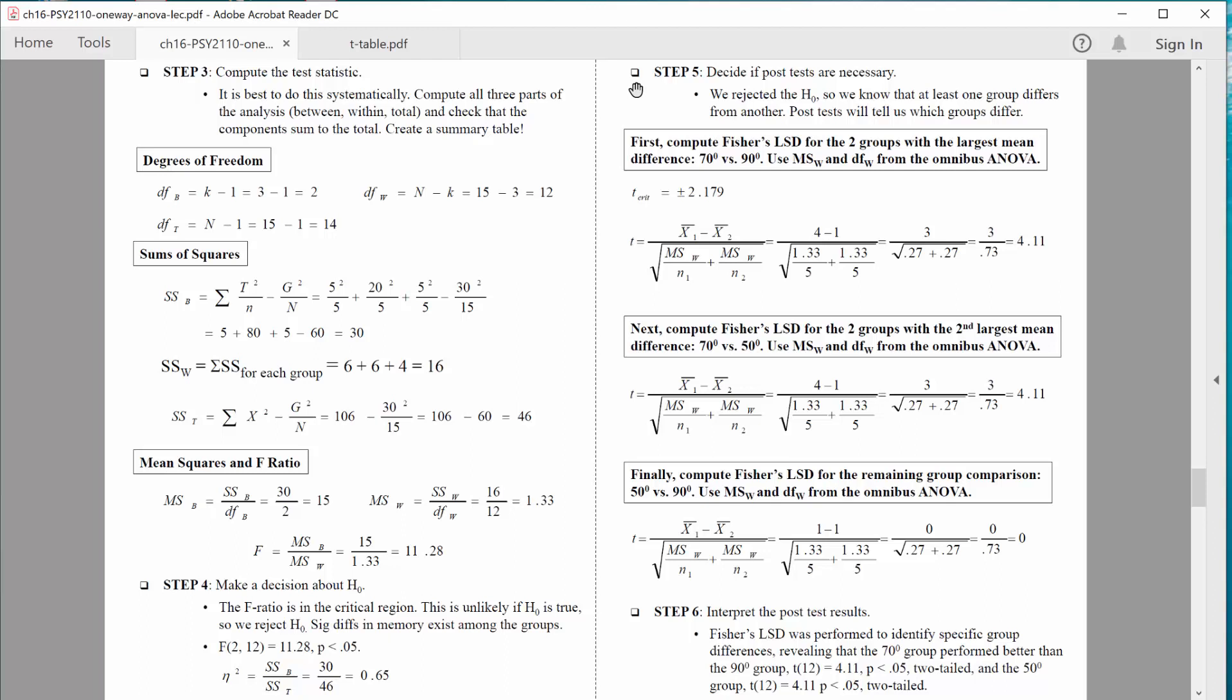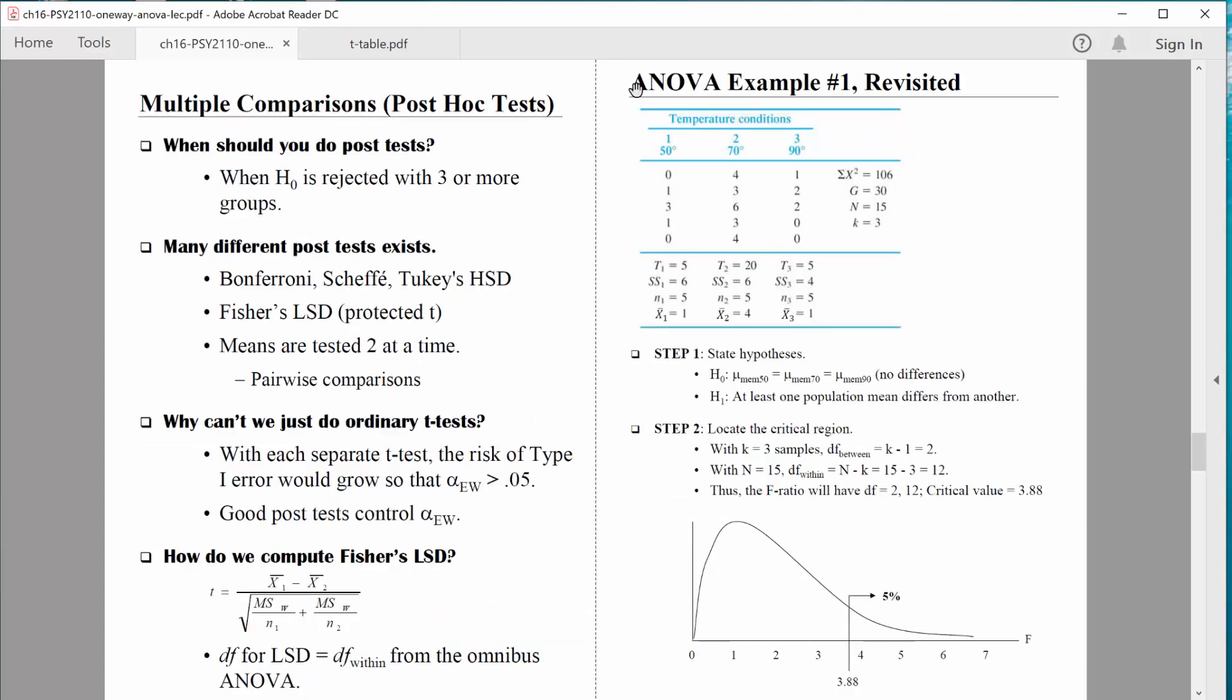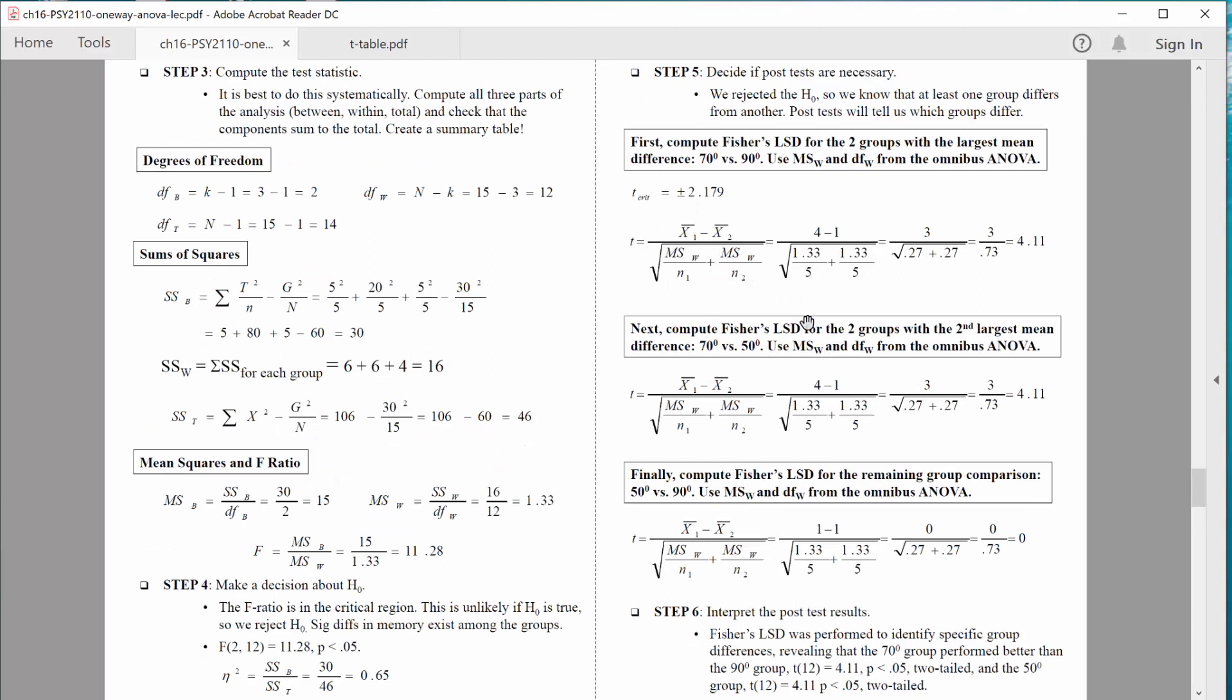So we need to decide if post-tests are necessary. We decided that because we rejected the null hypothesis with our overall omnibus test, at least one group does differ from another. So we need these post-tests. We have to determine which two groups to compare first. This example is just a little bit odd because we have two groups with the exact same mean. So I'm looking for the biggest difference. So let's first just simply decide to compare the 70-degree room with the 90-degree room. So we have a mean of 4 versus a mean of 1.